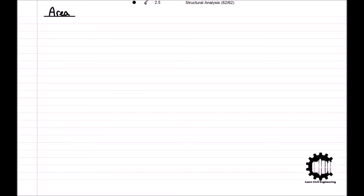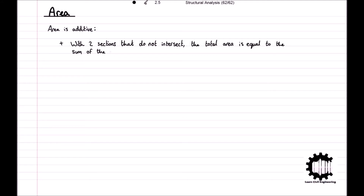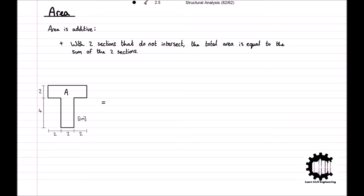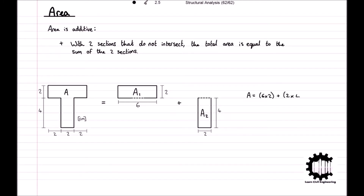The concept of area is relatively simple, and one of the basic principles is that area is additive, where if you have two sections that do not intersect, you can easily calculate the total area of the sections by adding the two together. For example, the total area of this T-shape section, A, is equal to the area of the top rectangle, A1, plus the area of the bottom rectangle, A2. So in this case, the total area of the T-shape section is equal to 20 centimeters squared.